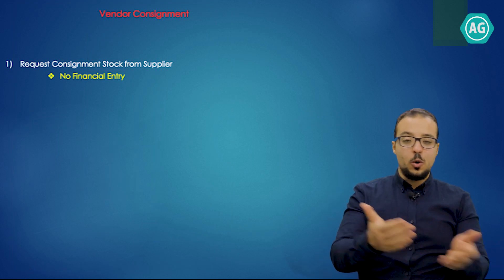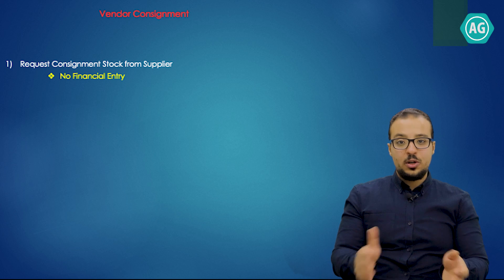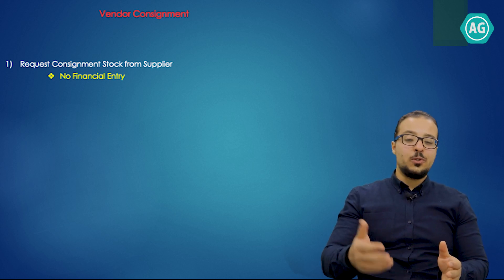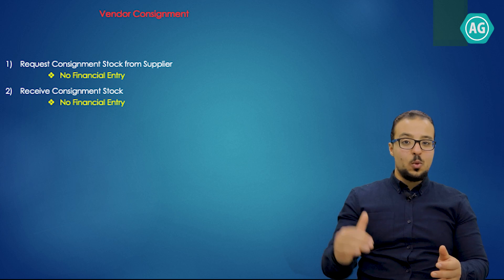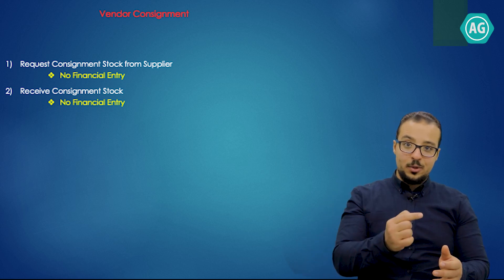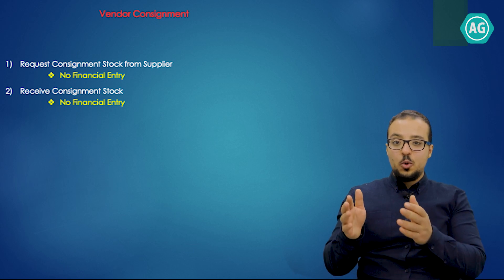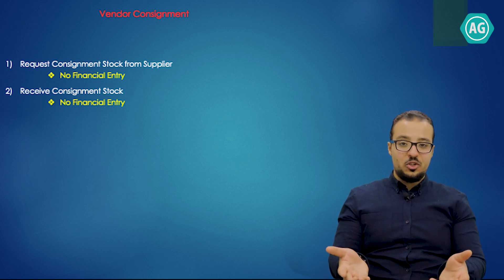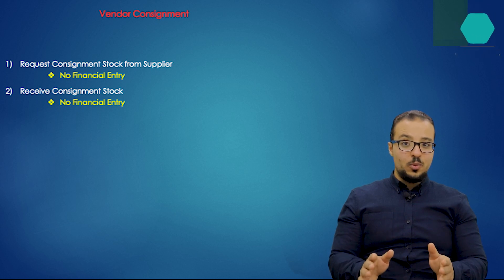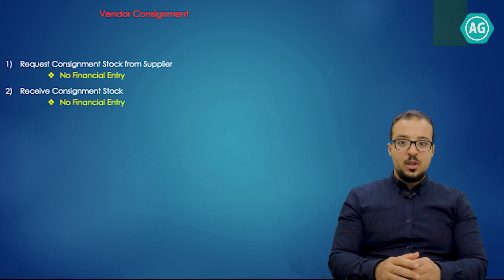The vendor consignment process has several steps. The first step is to create a purchase order to agree with our supplier to transfer the stock to our storage location — there is no financial entry at this stage. The second step is to physically receive the stock and post a goods receipt, which increases the quantity of consignment stock related to this supplier. Since this stock is not owned by us, we cannot post any financial entries — it will be an unvaluated goods receipt, increasing quantity without increasing value.